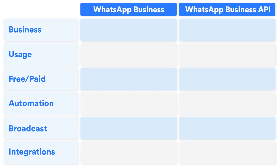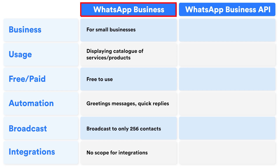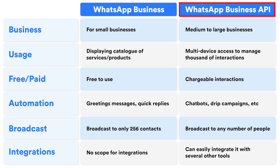You might be wondering what exactly is the difference between WhatsApp Business and WhatsApp Business API. WhatsApp Business is a separate application built for small businesses who have a single person support team. WhatsApp Business API, on the other hand, is a powerful tool that allows businesses to communicate with their customers in a more efficient and personalized way.